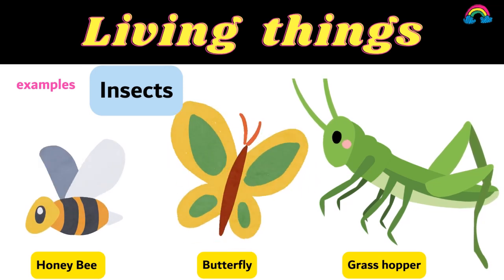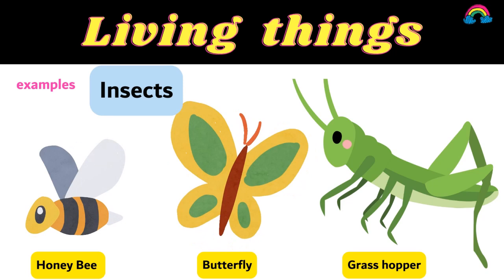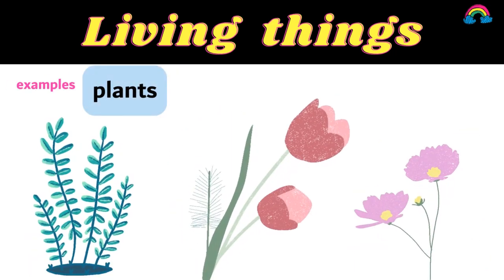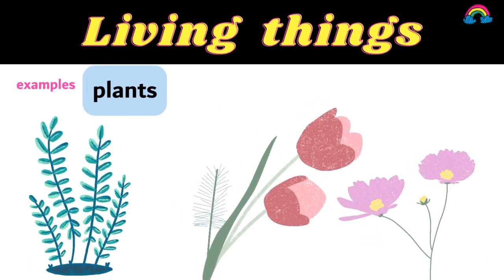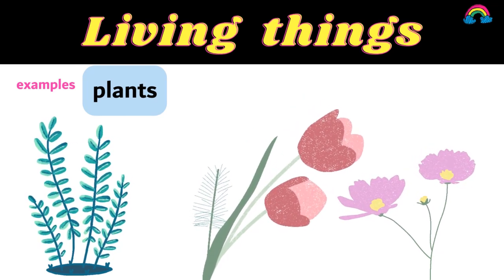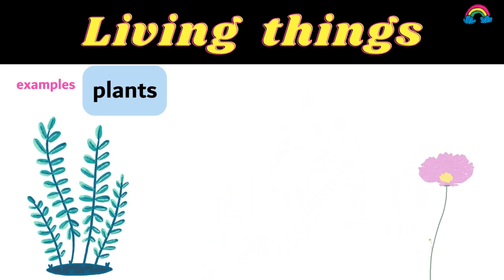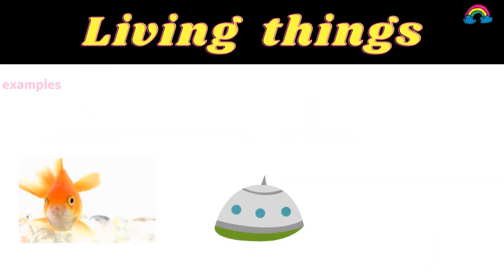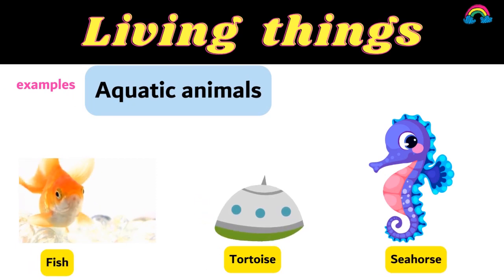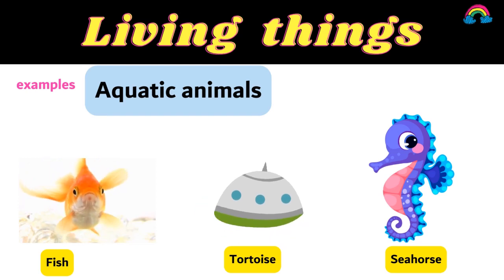All plants are living things. All aquatic animals are living things, like fish, tortoise, and seahorse.